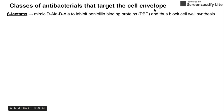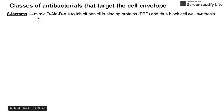The biggest group is the beta-lactams. These basically mimic an integral component of the peptidoglycan cell wall — the D-ala-D-ala, a string of two amino acids. Beta-lactams mimic the D-ala-D-ala, which allows them to inhibit penicillin binding proteins (PBPs) — proteins that normally link together two D-ala-D-ala chains. Beta-lactams act as a competitive inhibitor, going into those PBPs and blocking cell wall synthesis.